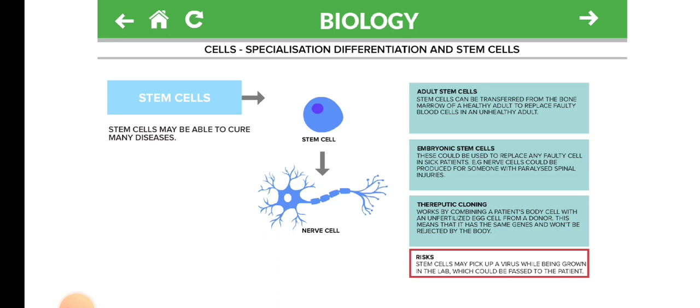Embryonic Stem Cells. These could be used to replace any faulty cells in sick patients. For example, nerve cells could be produced for someone with paralyzed spinal injuries.